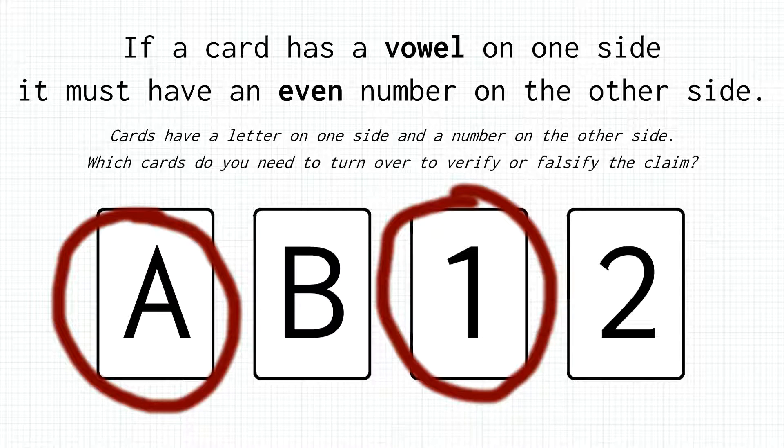What about the remaining cards? Well, we do not care. The number 2 might have a consonant or a vowel on the other side, but it doesn't matter. According to the rule, a vowel always leads to an even number, but a consonant could also lead to an even number. An even number could have both a vowel or a consonant on the other side, so we do not need to turn the 2 over.